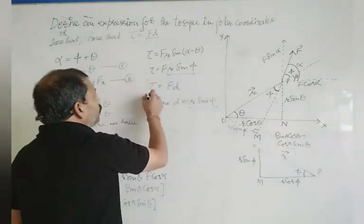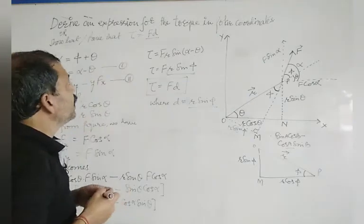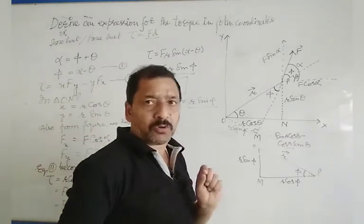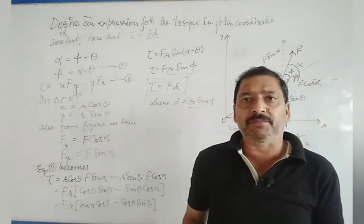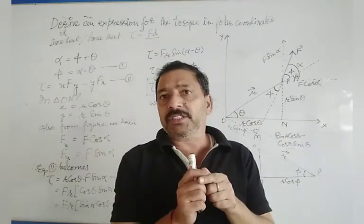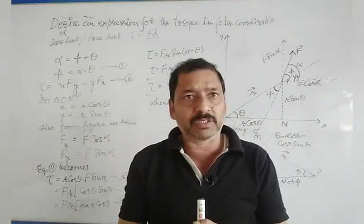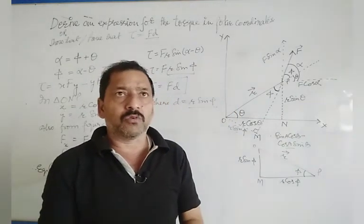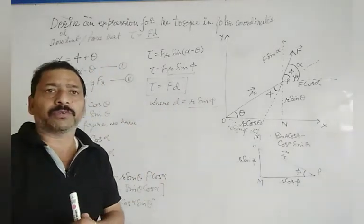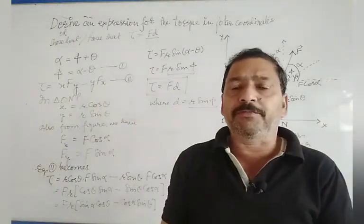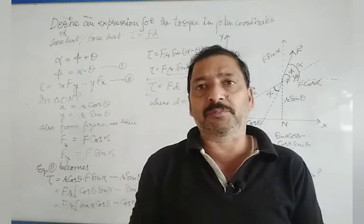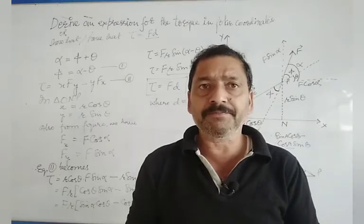And so, dear students, this is the equation which we were supposed to prove. This question comes in two ways. One is: derive an expression for the torque in polar coordinates. Or the other way, it may be in the form: prove that tau is equal to F into D where D is the perpendicular distance between the axis of rotation and the line of action of force. This was all about the expression of torque in polar coordinates. I hope you understood it well, but if you feel any problem, feel free to write in the comment box so that I may be able to explain it in the next lecture.